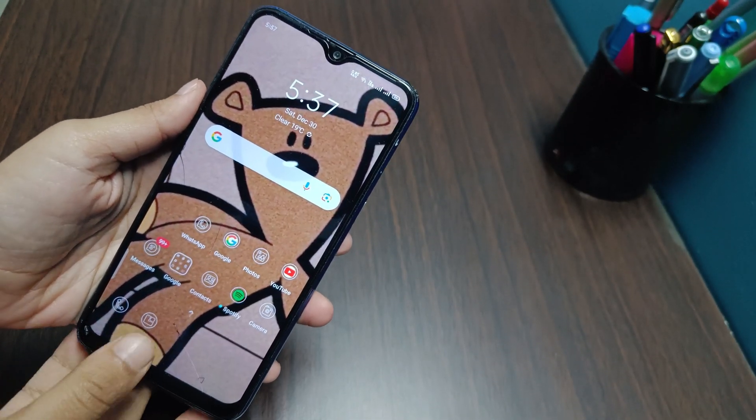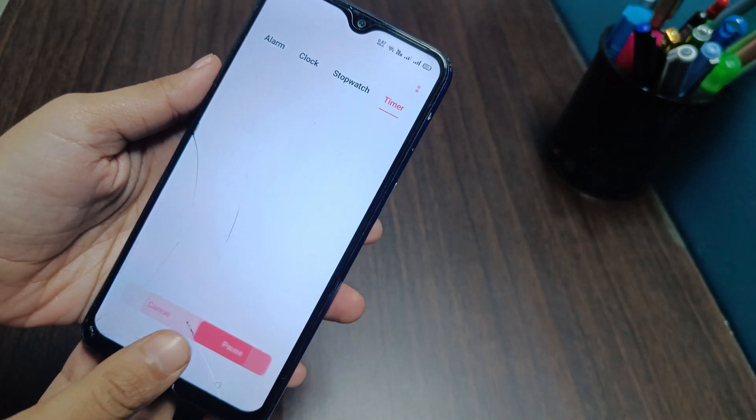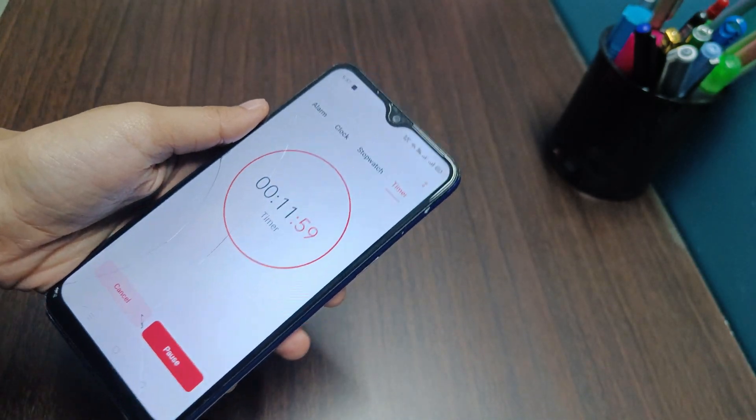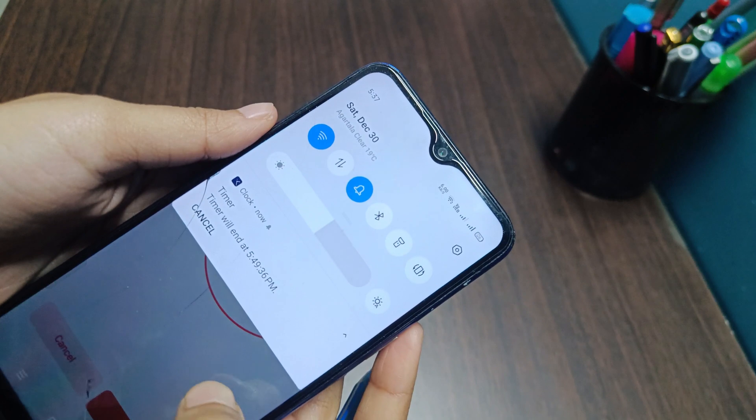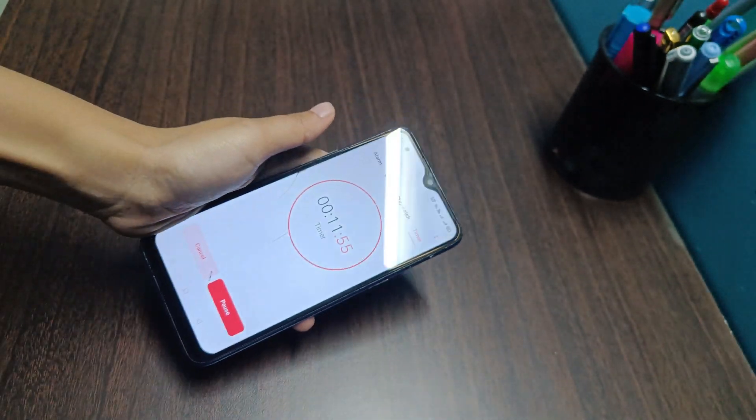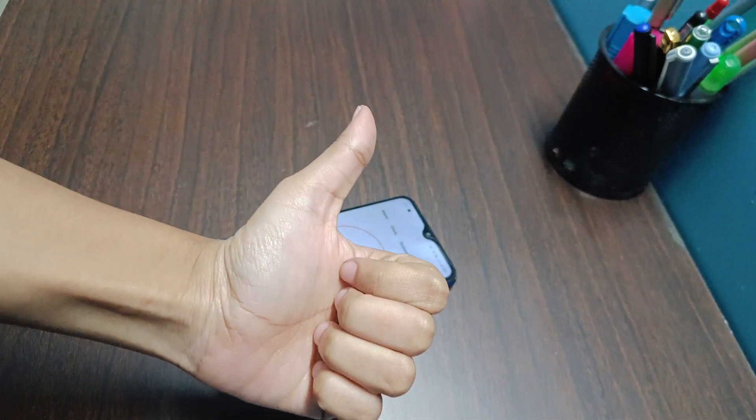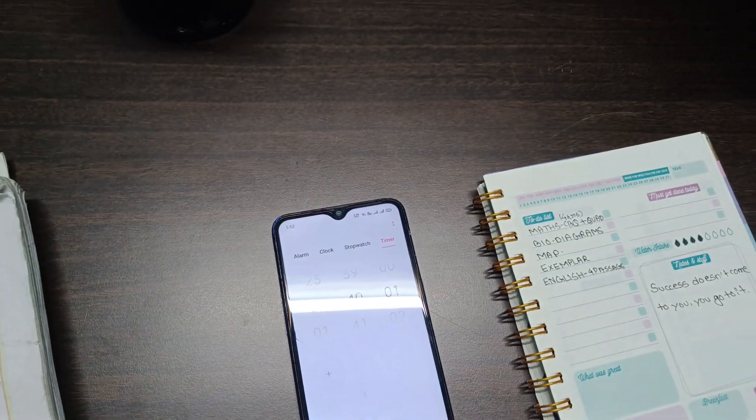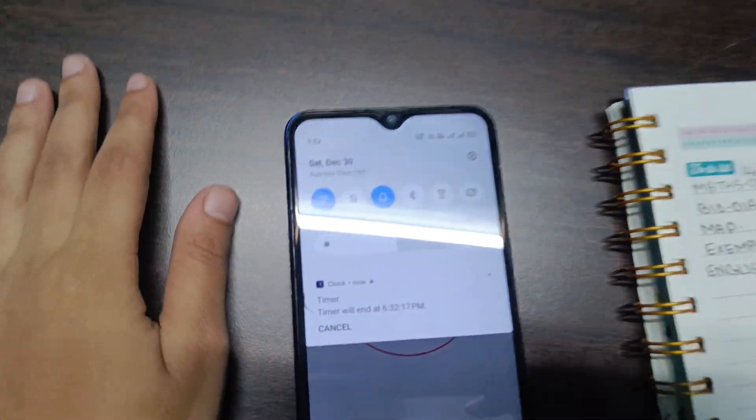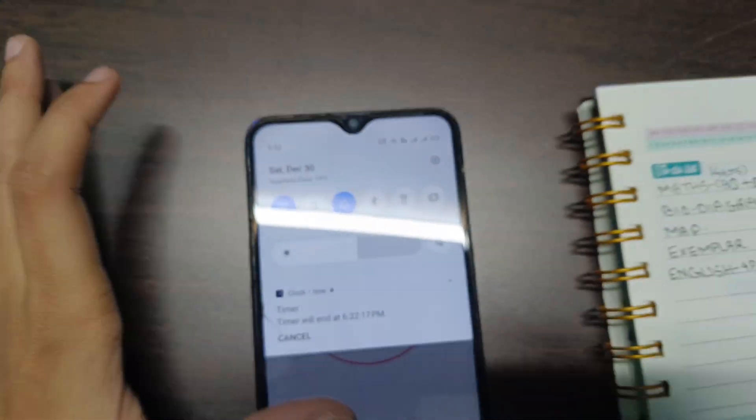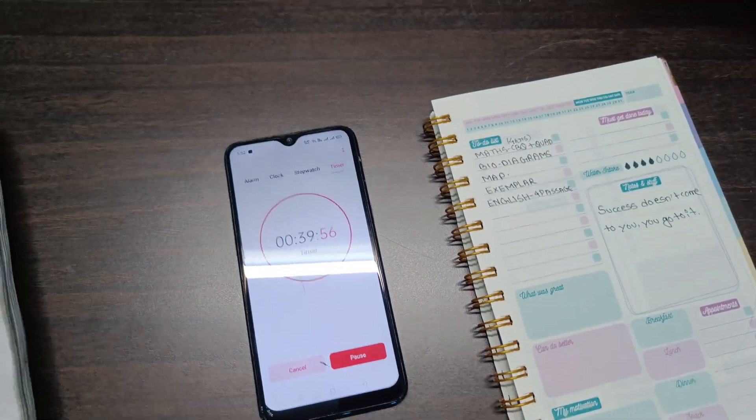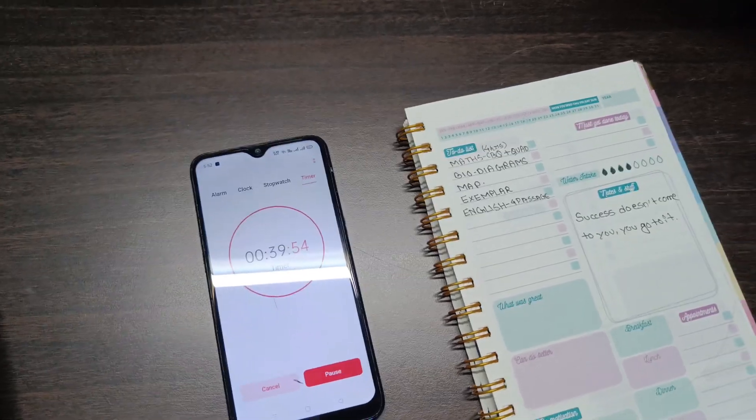Currently 5:37 right now. I will take a break of 12 minutes, then I will start doing the biology diagrams. This timer will end at 5:49. Currently 5:52 PM, now I'll place a timer of 40 minutes, which will end at 6:32 PM. I will start practicing the diagrams of biology from the very first chapter.